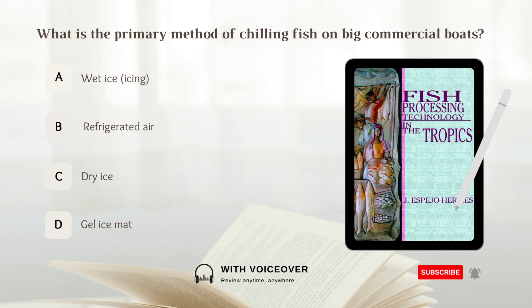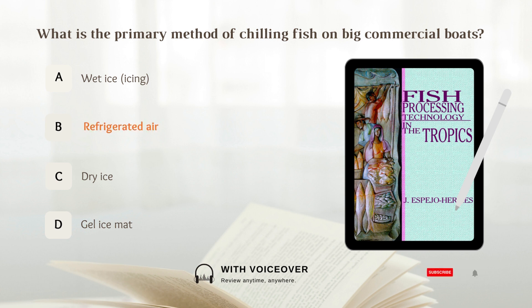What is the primary method of chilling fish on big commercial boats? A. Wet ice or icing. B. Refrigerated air. C. Dry ice. D. Gel ice mat. Answer: B. Refrigerated air.